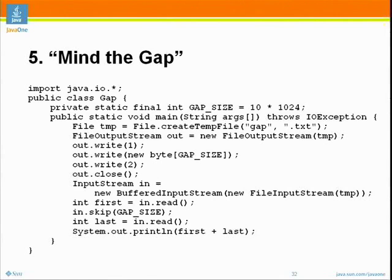We set temp to create a file named gap.txt — this creates a random sort of name not currently in use. Then we get a FileOutputStream on that temp file. We write byte 1 to the file. Then we write a bunch of bytes — 10 kilobytes of zeros, because we create an array of length 10K which is initially empty. Then we write 2. Then we close the file.